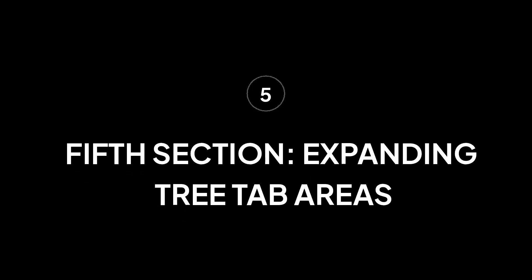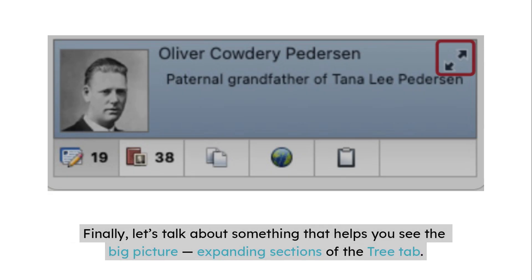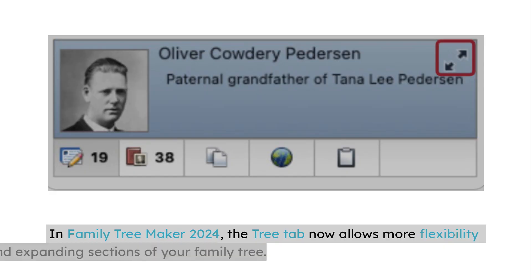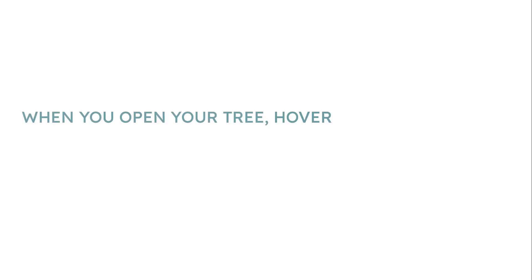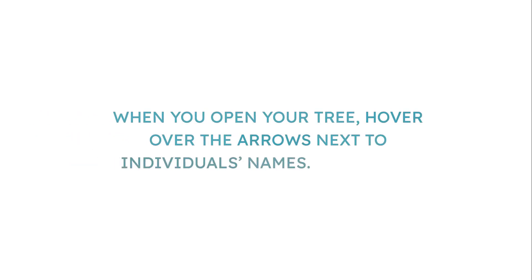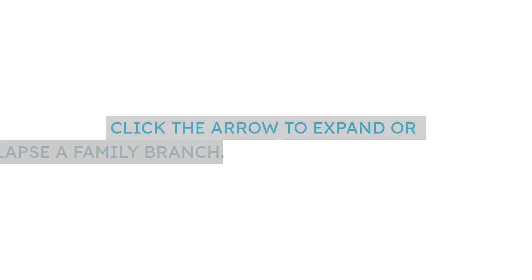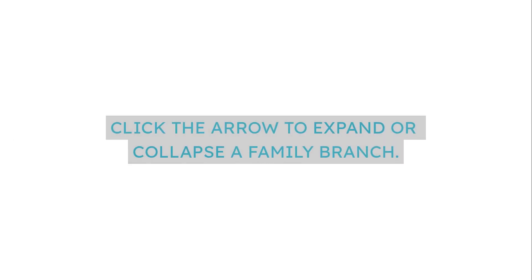Tip 5: Expanding Sections of the Tree Tab. Finally, let's talk about something that helps you see the big picture. In Family Tree Maker 2024, the Tree Tab now allows more flexibility for viewing and expanding sections of your family tree. When you open your tree, hover over the arrows next to individuals' names.